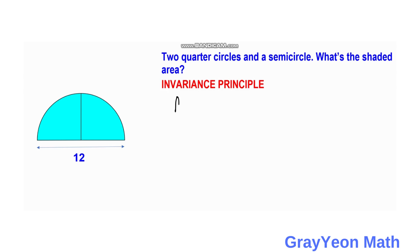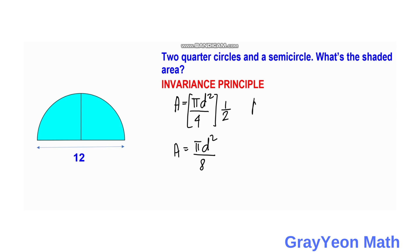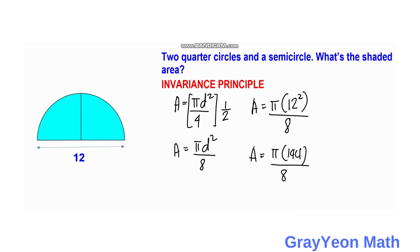Finding the area of this resulting semicircle: area equals pi times d squared over 4, multiplied by one-half because it is a semicircle, giving pi d squared over 8. Substituting d equals 12: area equals pi times 144 over 8, which again equals 18π square units.